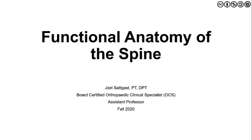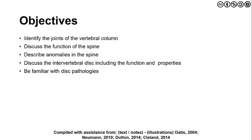Welcome to this overview of the functional anatomy of the spine. The goal of this lecture and podcast is to provide an overview of the vertebral column as well as the function and potential anomalies that we see in the spine. Additionally, some objectives to guide our discussion: we're going to look at the properties of a normal intervertebral segment and vertebral segment, as well as providing information related to disc pathologies.